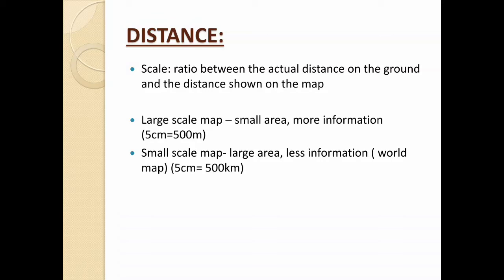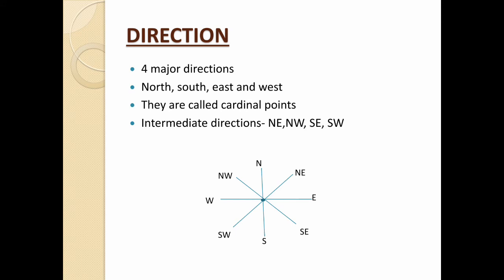The next component is direction. There are four major directions: North, South, East, and West. These are called cardinal points. There are also intermediate directions: North-East, North-West, South-East, and South-West. The area between North and West is called North-West, between North and East is North-East, between South and East is South-East, and between South and West is South-West. There are eight cardinal points in total.